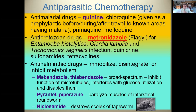Flagyl targets a number of protozoa including Entamoeba histolytica, which causes severe dysentery, and Giardia lamblia, a single-cell protist that can cause terrible diarrhea, dehydration, and electrolyte imbalance. In terms of anti-helminth drugs, these target tapeworms, roundworms, and flukes — all eukaryotic organisms that can cause significant problems.